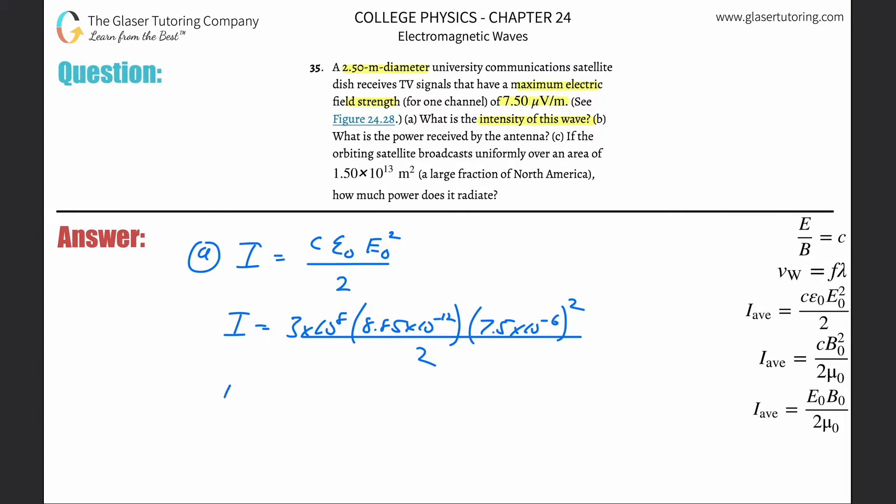All right, here we go. So 3 times 10 to the 8, multiplied by 8.85 times 10 to the minus 12, multiplied by 7.5 times 10 to the minus 6 squared, all then divided by 2. So here we go...